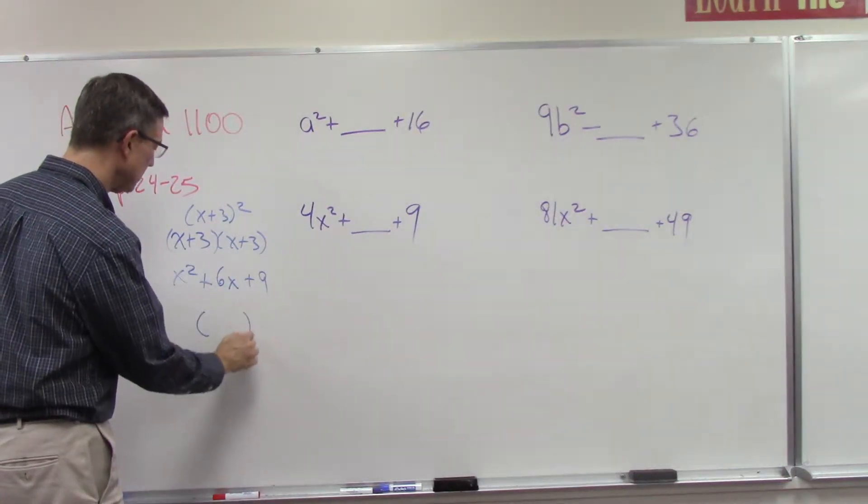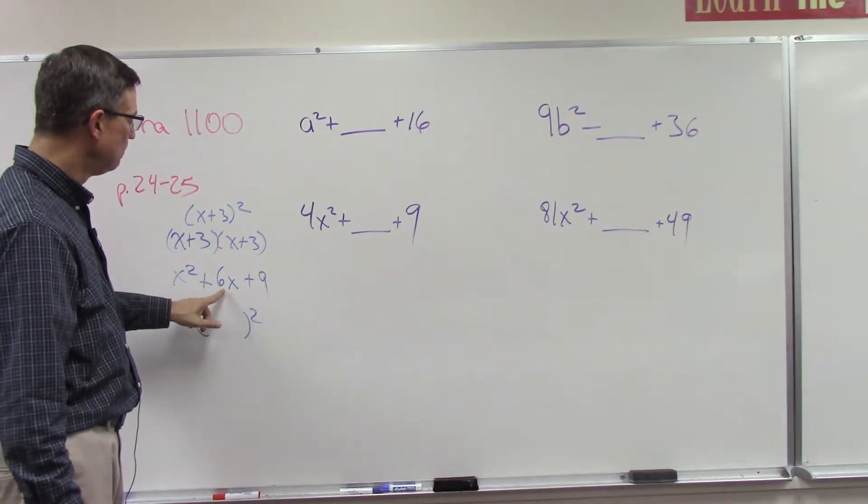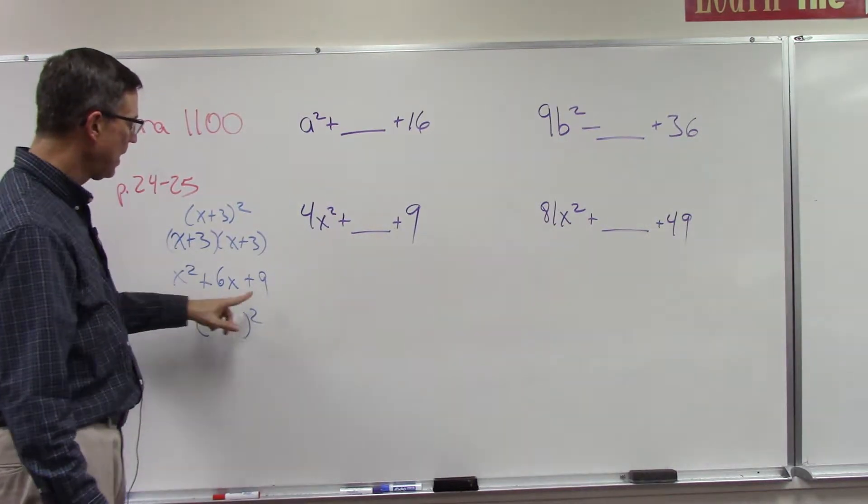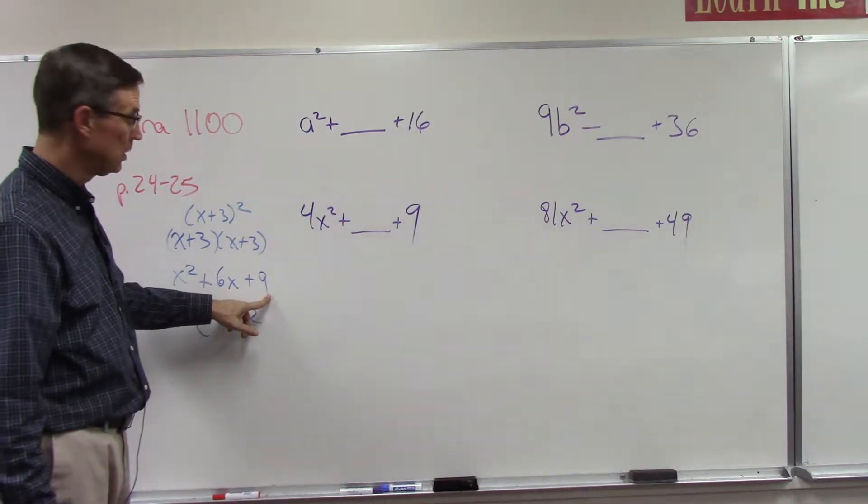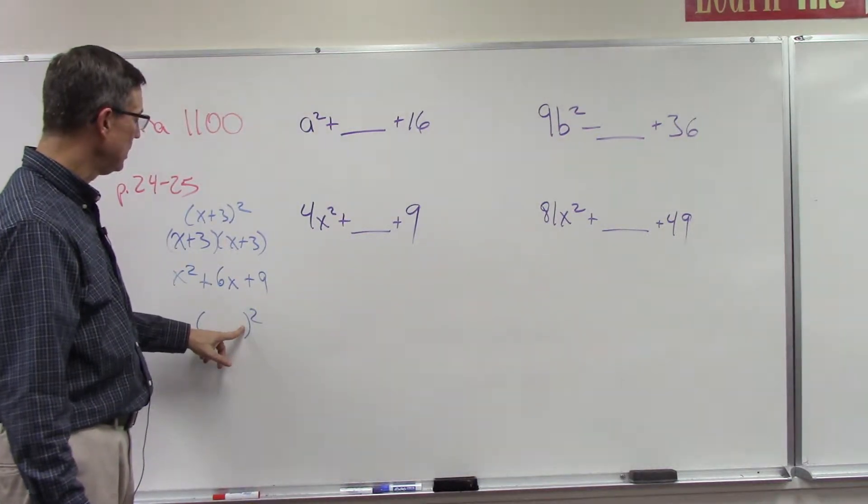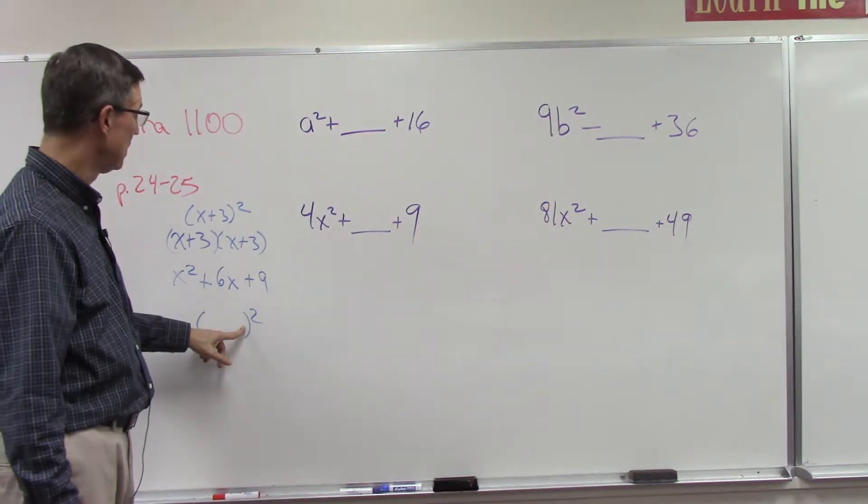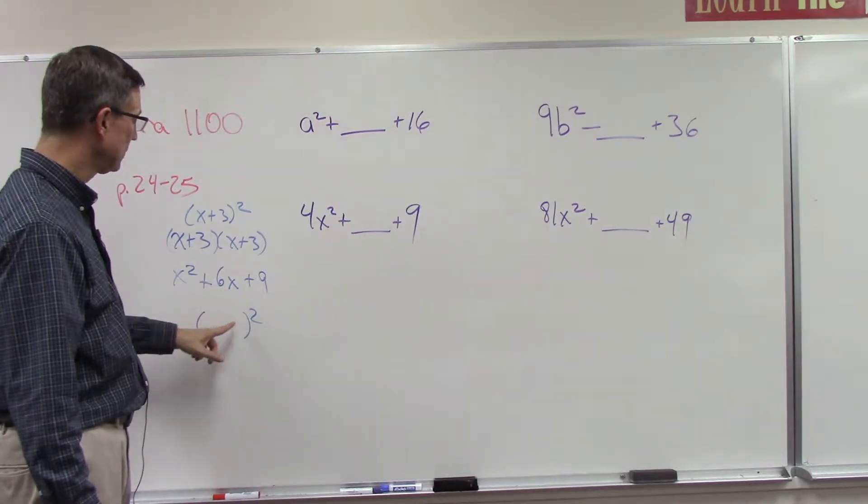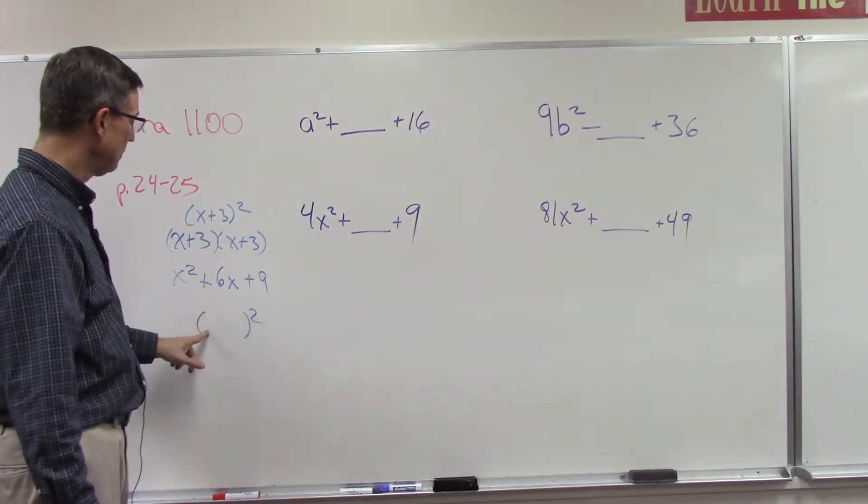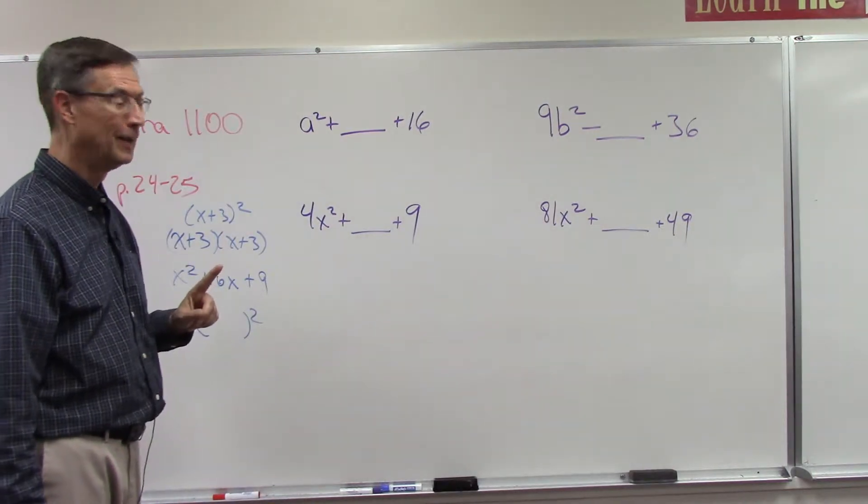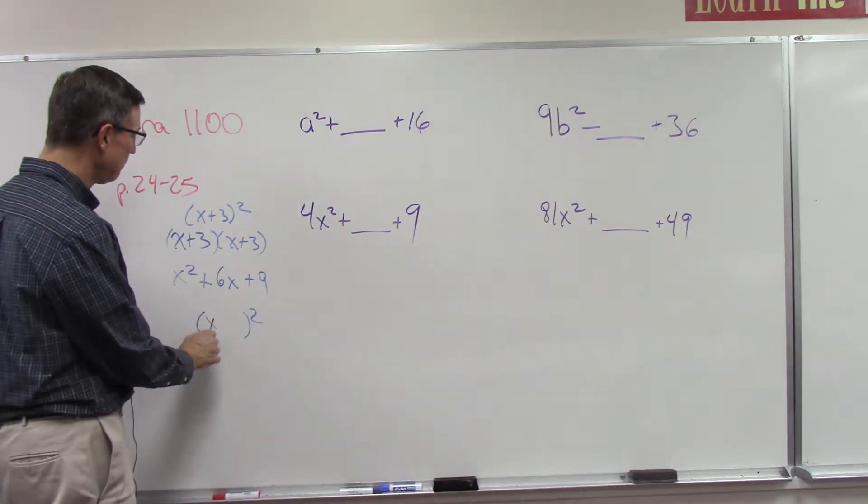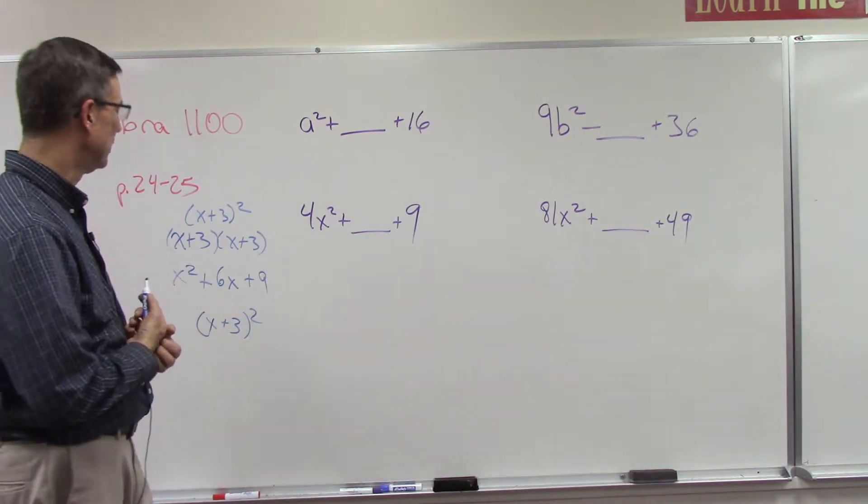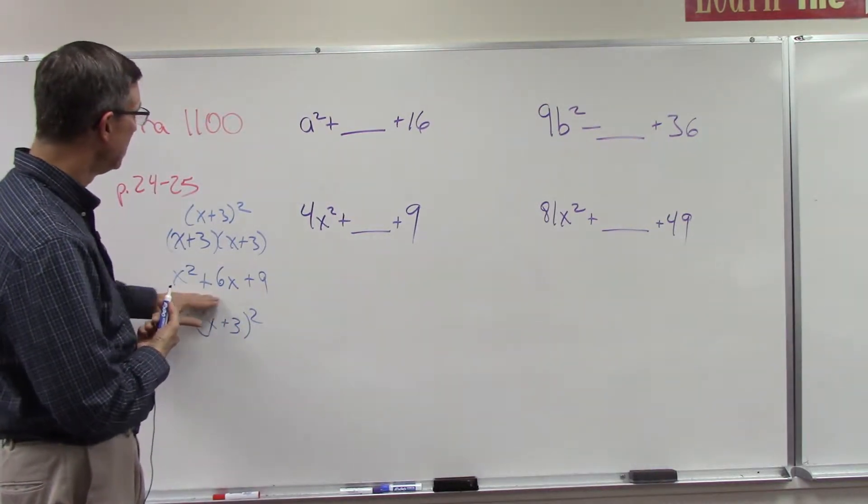So notice a pattern here. If I wanted to figure out what is this quantity squared, if this middle term—well first of all, it's gonna be the square root of this, right? And the square root of this is 3. So x here and 3 here. Now what is 3 times 2? If you take the numbers here times 2, you get this. So x times the 3, 3 times x times 2, and that gives you the middle term. Then it is a perfect square, so x plus 3 squared.